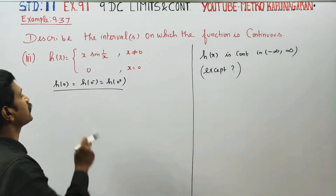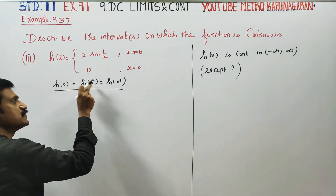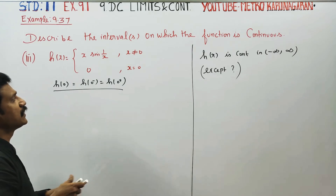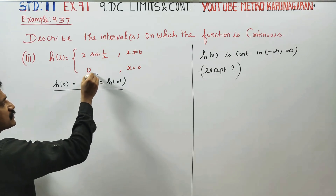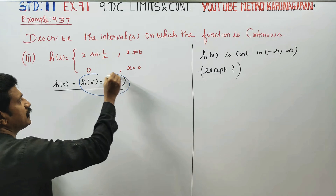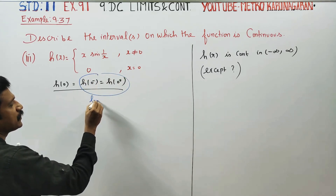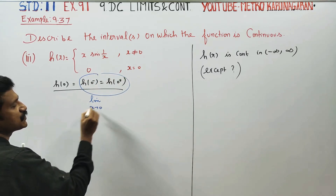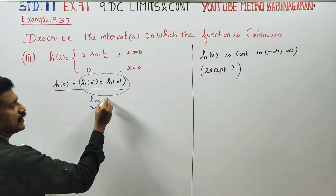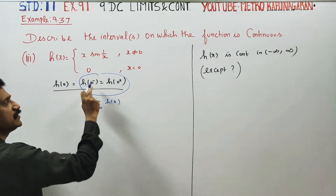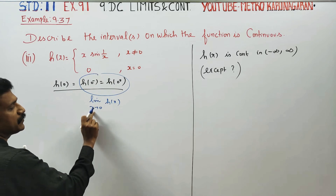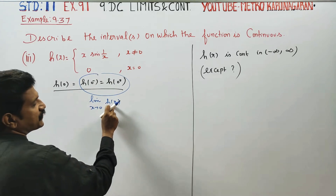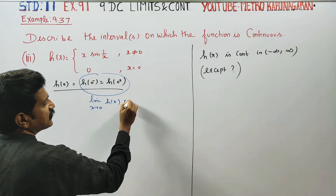Now let us prove that h(0⁻) = h(0) = h(0⁺). The meaning of this is: limit as x turns to 0 of h(x) exists. That means the limit of x tends to 0 of h(x) exists. This answer is correct.